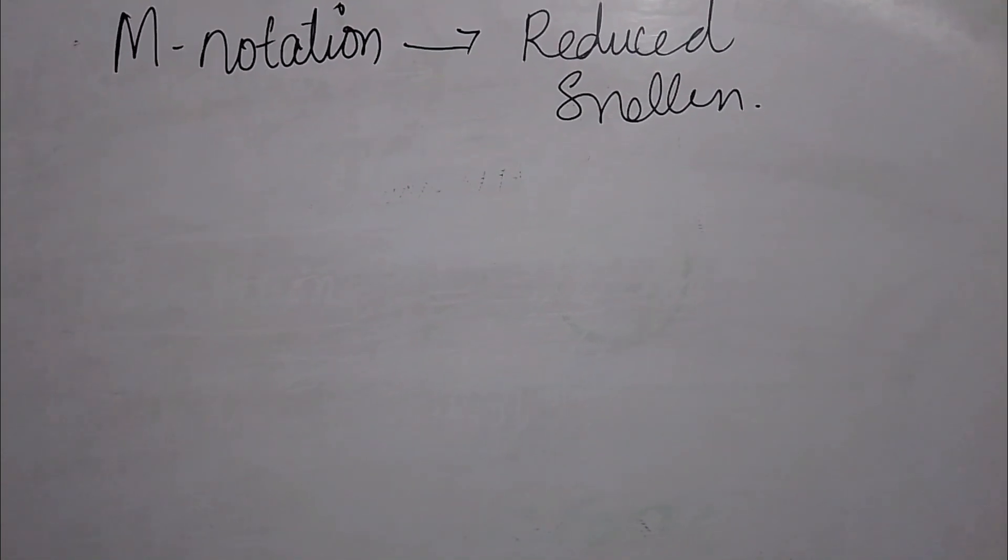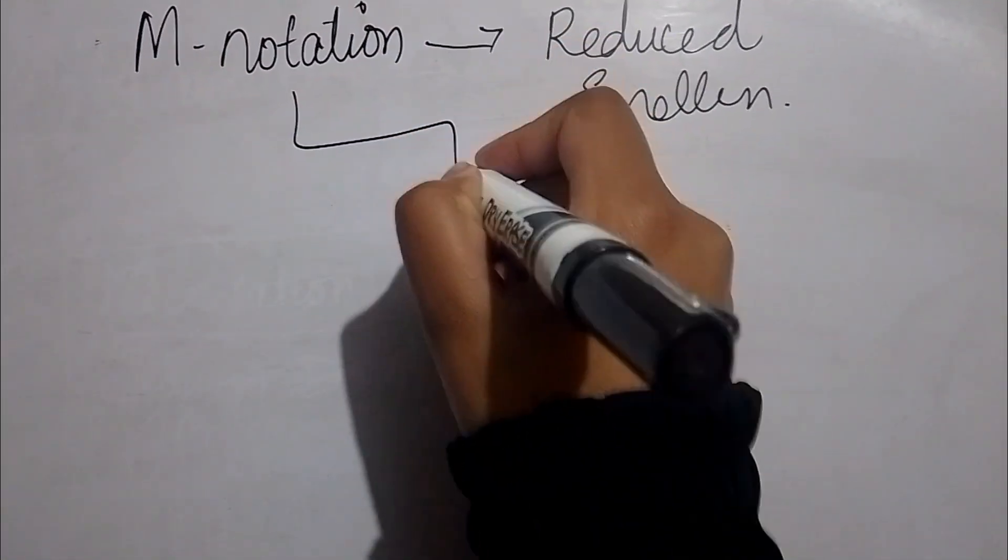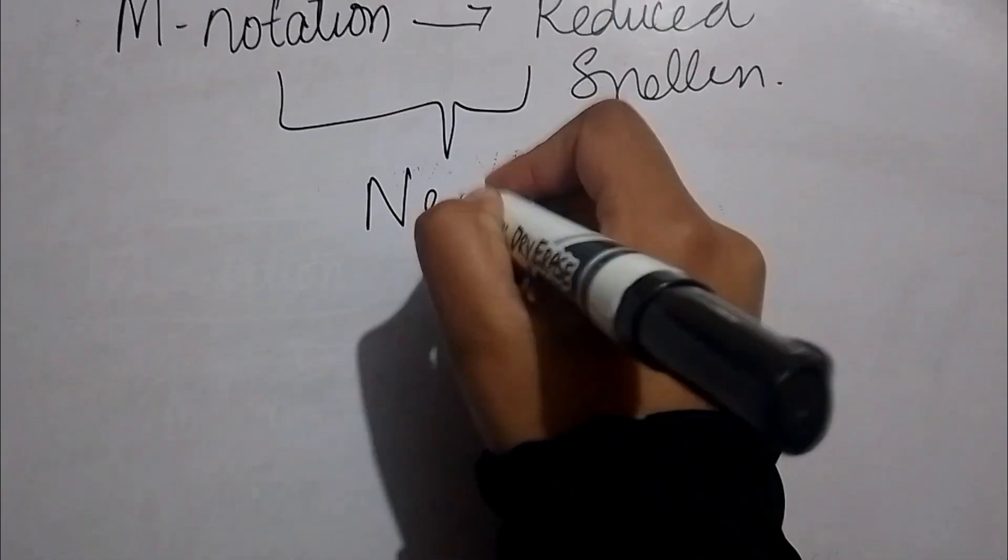Today we are going to learn how we can convert M-notation into the reduced Snellen format. M-notation and reduced Snellen format are both related to the near visual acuity of patients.